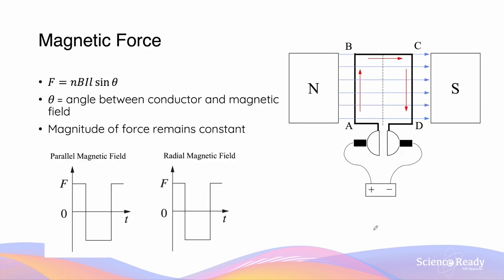The rotational motion will continue due to the momentum of its rotational motion prior to reaching this vertical orientation. Now, despite the fact that the magnitude of torque behaves very differently when using parallel versus radial magnets, it's important to understand that the force due to the motor effect will remain the same magnitude in the two different types of magnetic fields. This is because the magnitude of force acting on the armature is given by the equation NBIL sine theta. The angle theta here is the angle between the wire — so side AB and side CD — and the direction of the magnetic field.